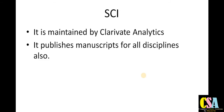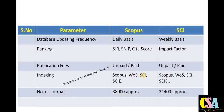The next category is Web of Science. This type of journal is maintained by Clarivate Analytics — earlier it was maintained by Thomson Reuters, but at present it is maintained by Clarivate Analytics. It is also known as the Web of Science journal or SCIE index journal. There are separate video categories for this as well. It publishes approximately 21,000 journals in various categories.